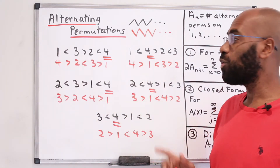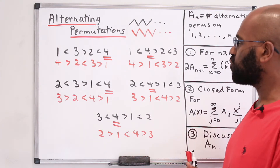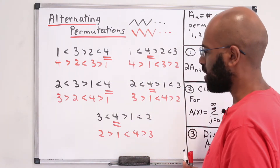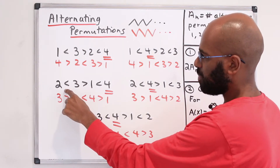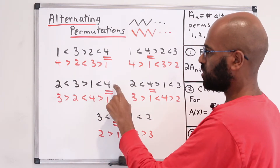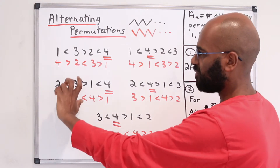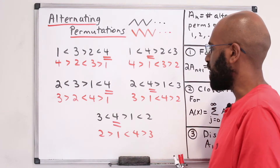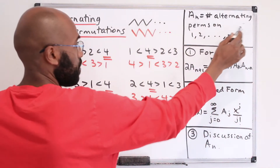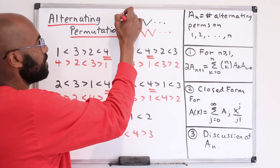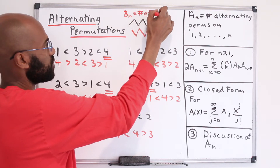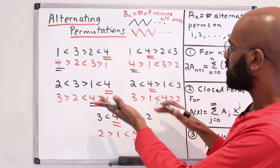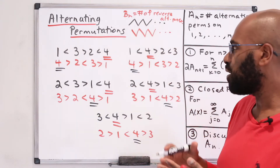I've written down in red here the five different reverse alternating permutations. There is an actual bijection, or one-to-one correspondence, between alternating and reverse alternating permutations, where you replace any number by n plus 1 minus that number. So here we replace every number by 5 minus that number, and that flips any of the relations we had before. If this is less than this, then 5 minus this is greater than 5 minus this. So the 4s appear in the first spot or the third spot.